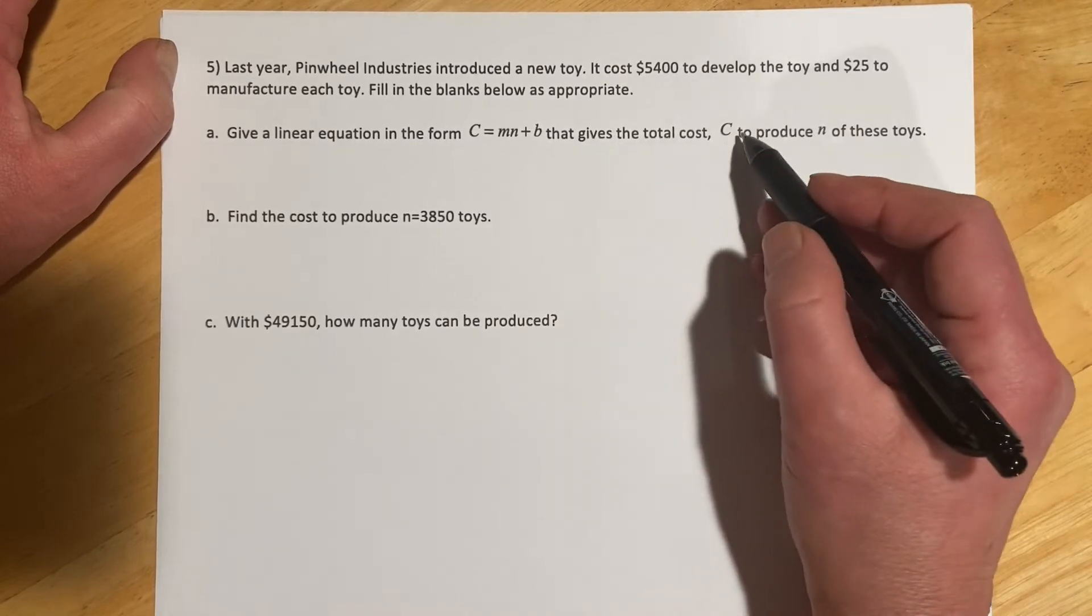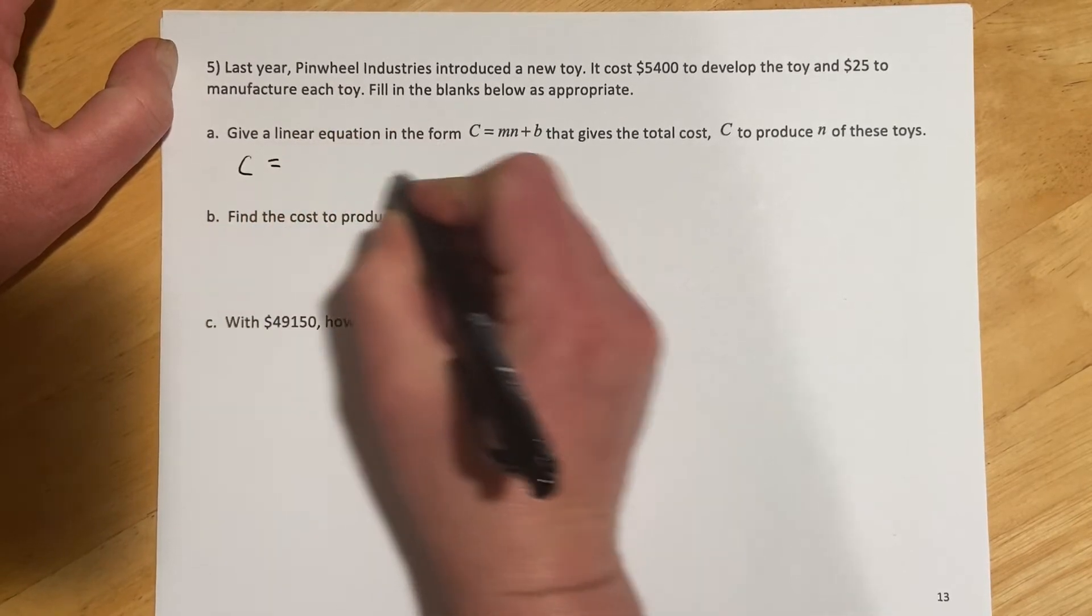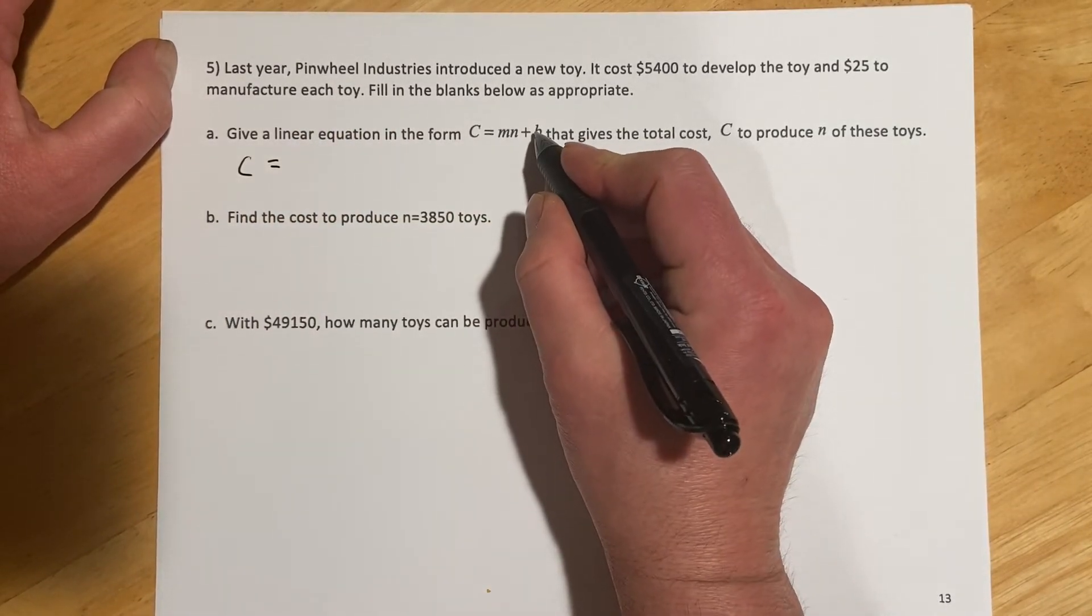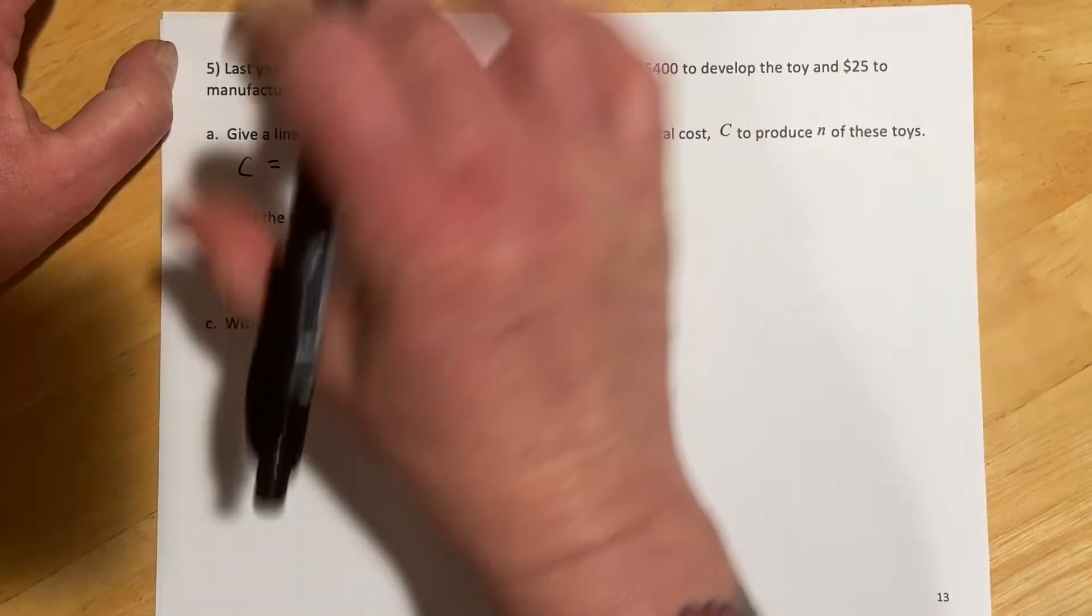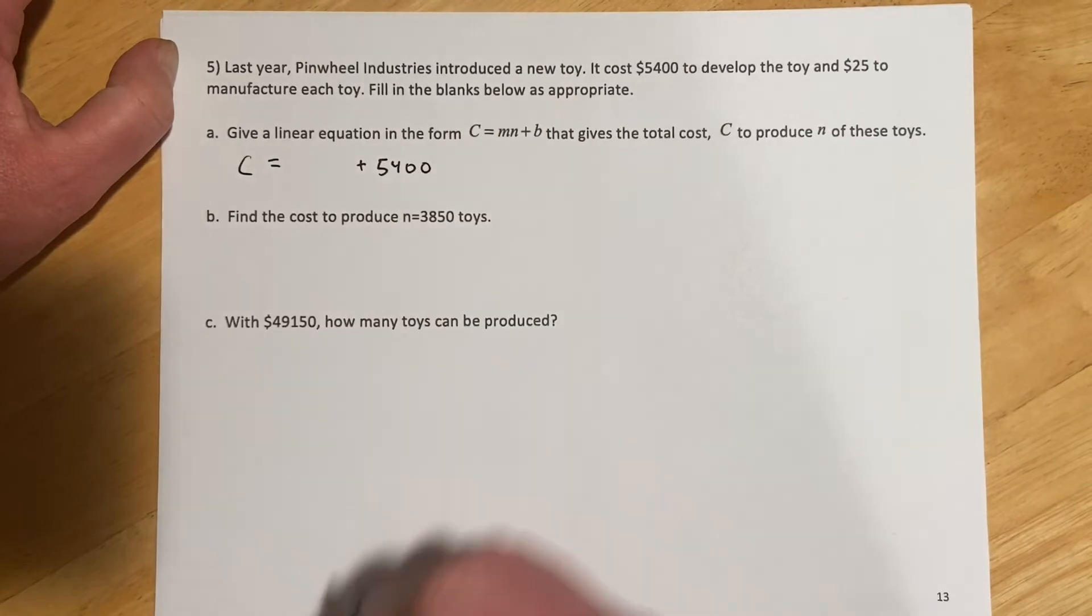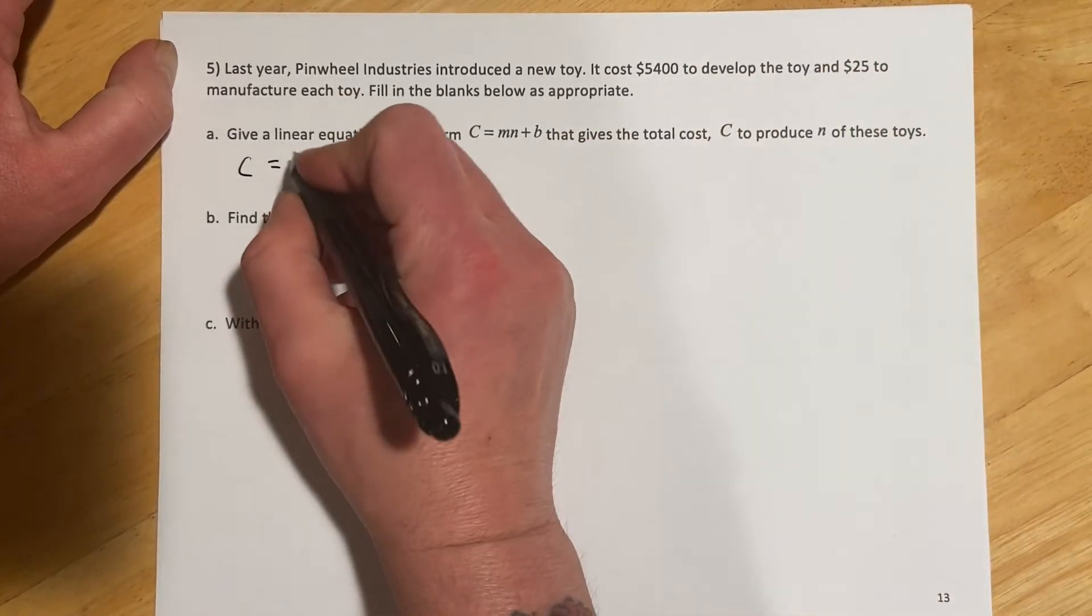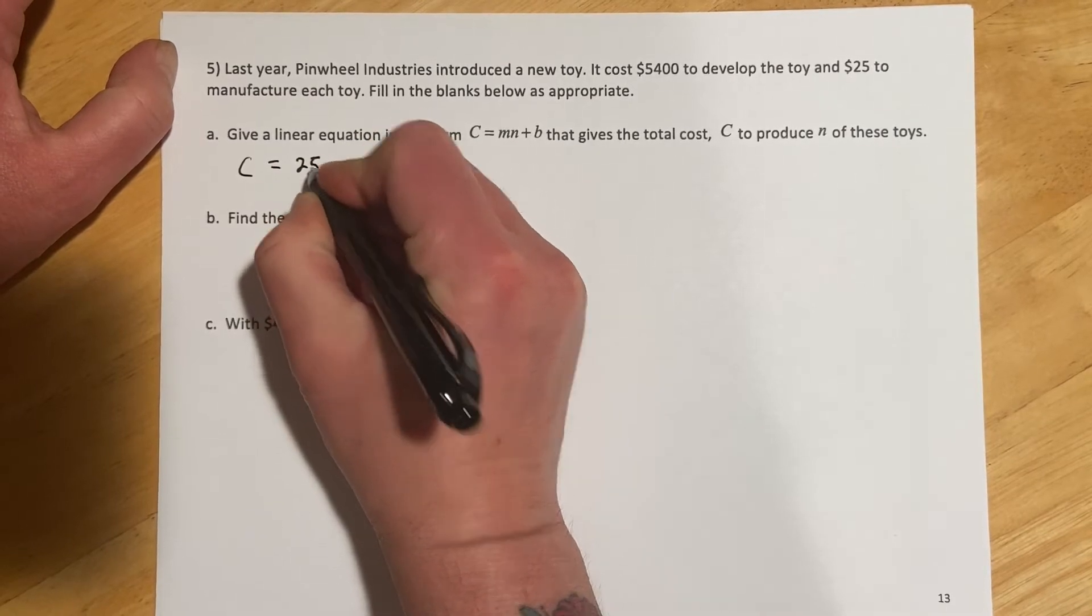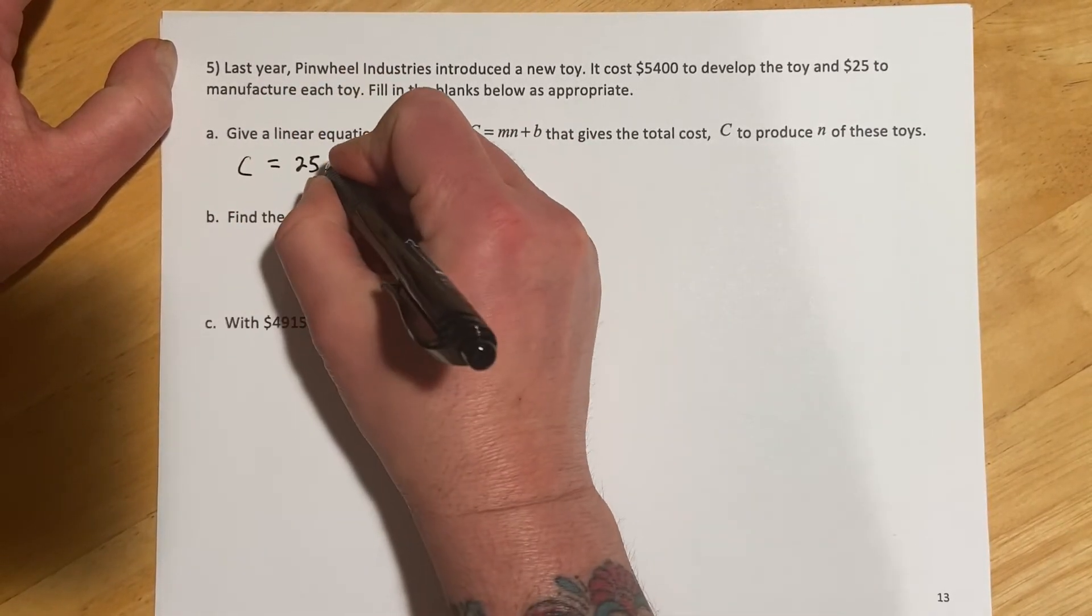But this time they're calling it C equals MN plus B, that gives the total cost C to produce N of these toys. So our cost is going to equal our starting amount, this B. So our starting amount would be $5,400 if I make none of these things. And then it's going to be $25 for each unit, and they want me to use N for the number of units.